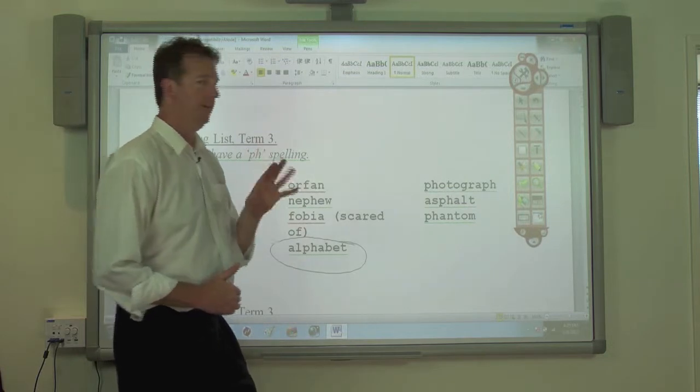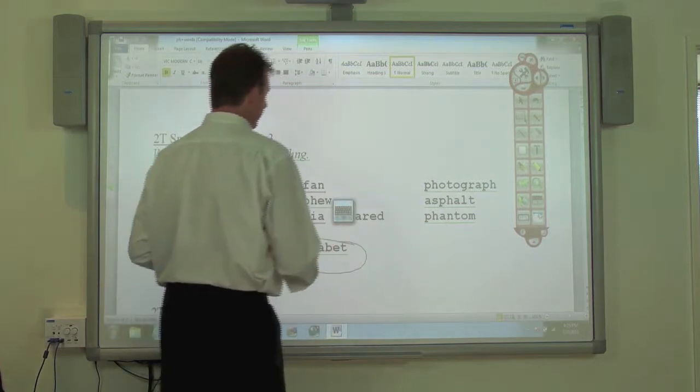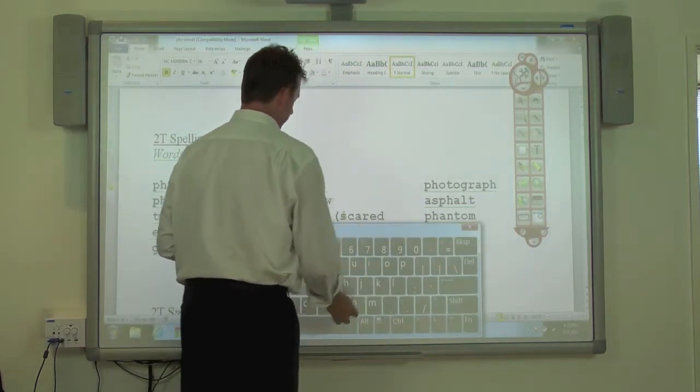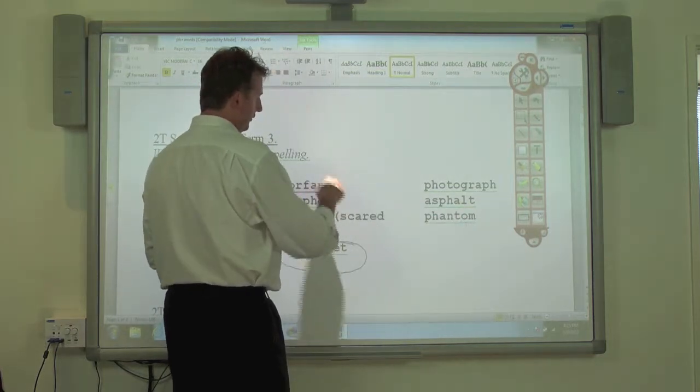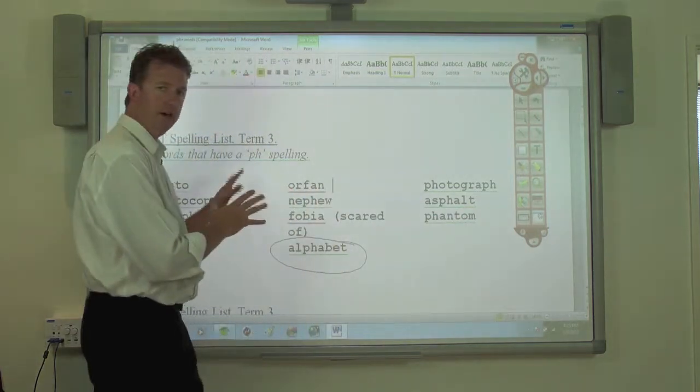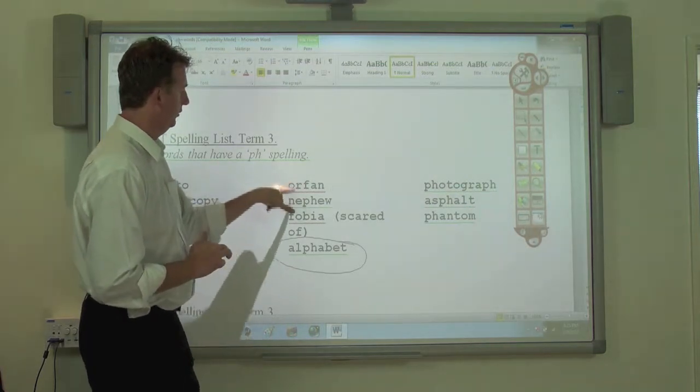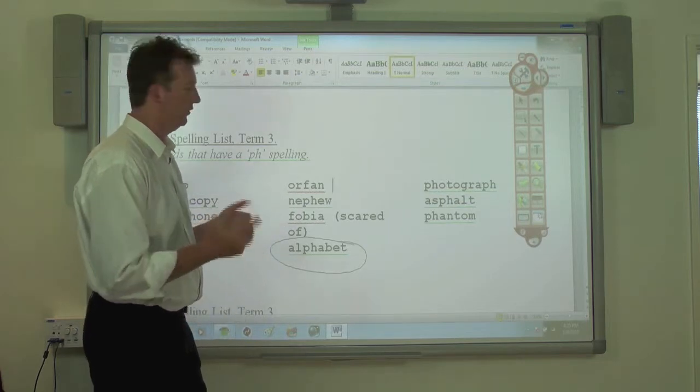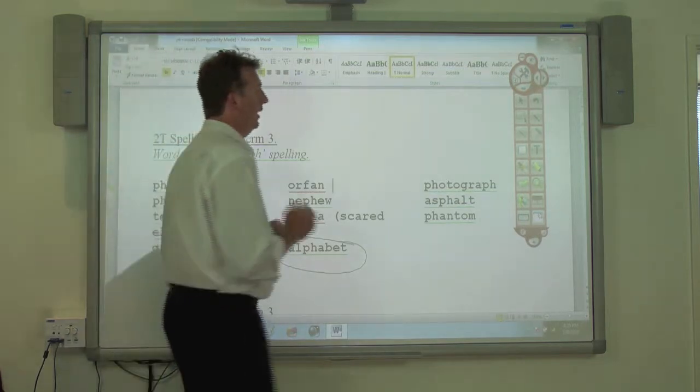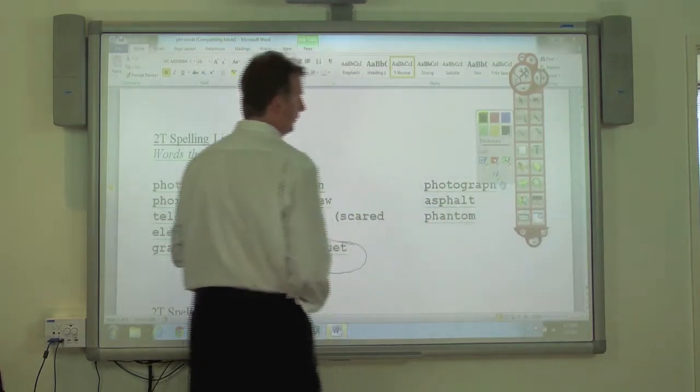That's a handy tool. Another thing we can do is use text recognition. This is a spelling worksheet, so I want to change that to orphan with the proper spelling. What I can do is go to pen, annotate in Word, and select text recognition.